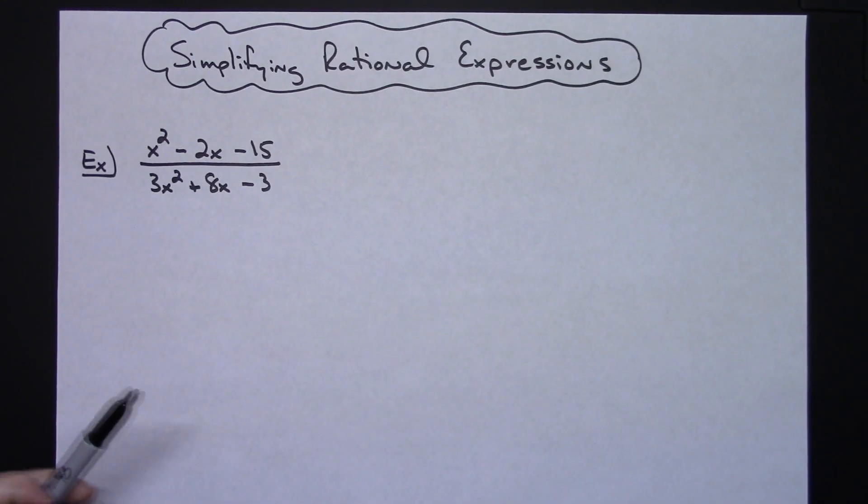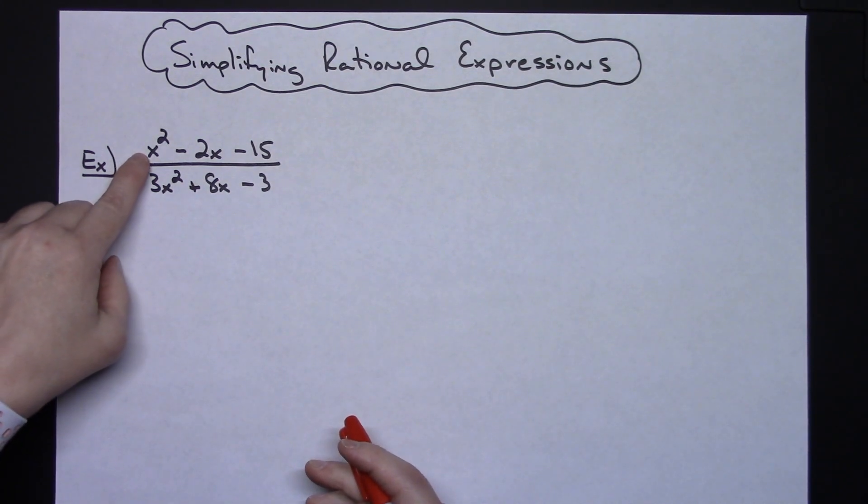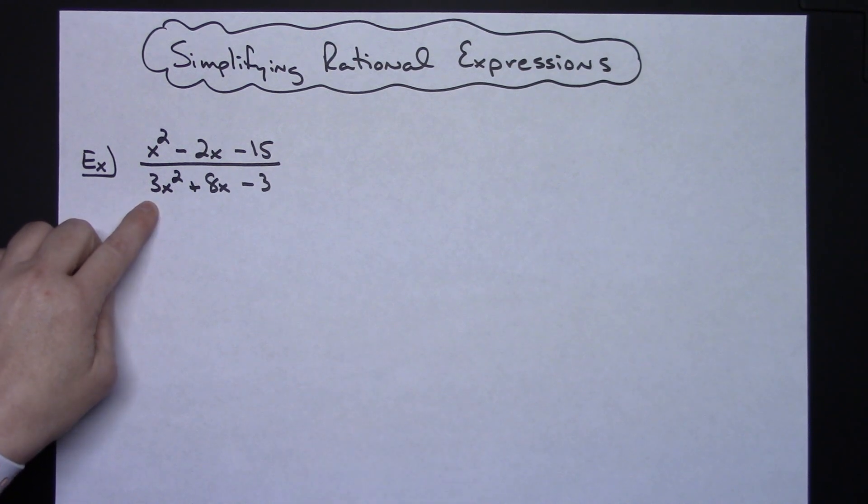In this video I'm going to work out two examples of how you would go about simplifying a rational expression. I am going to assume that you know how to factor trinomials both with a leading coefficient of one and a leading coefficient with something other than one.